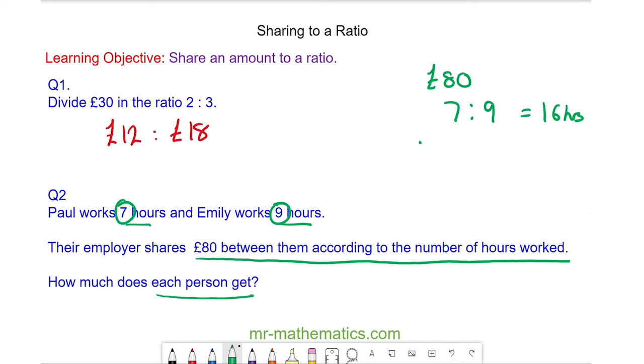So the pay per hour will be the £80 divided by 16, which is £5 per hour.